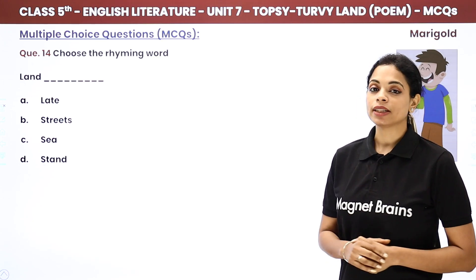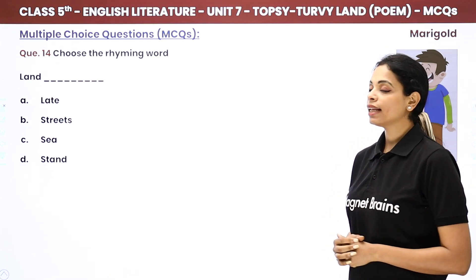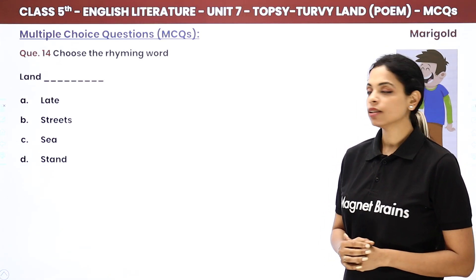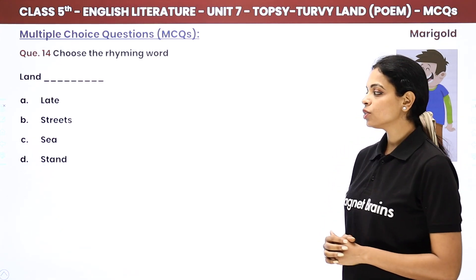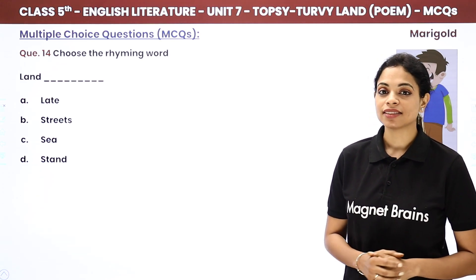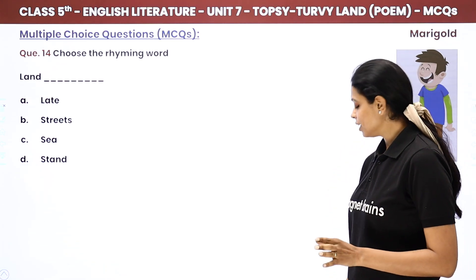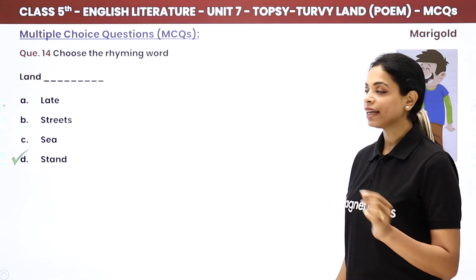Choose the rhyming word. What is the rhyming word for 'land'? Land–late? No. Land–streets? Land–sea? Land–stand? The answer is clear — land and stand rhyme.